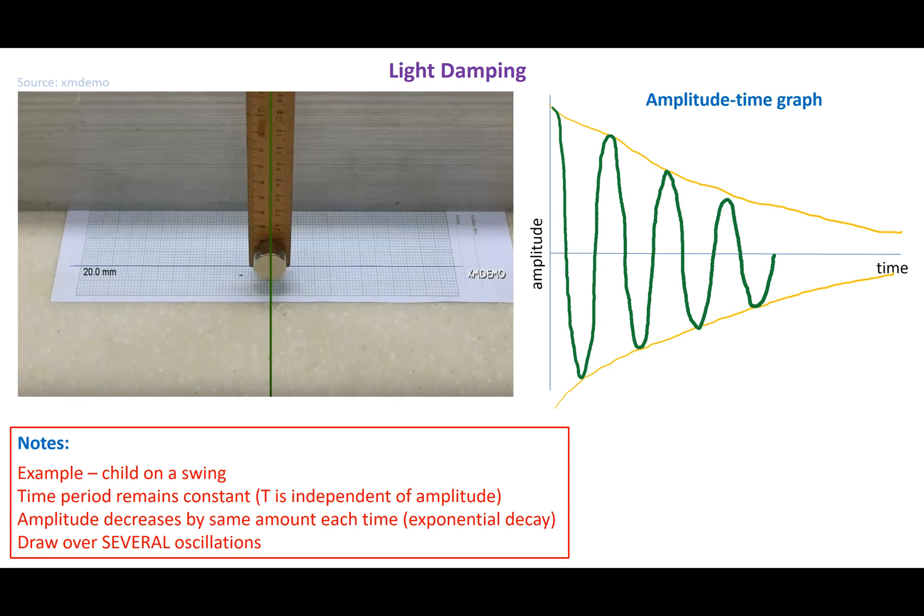If you were to graph what this looks like, you'd get the graph that we have to the right, where the amplitude is decreasing by the same amount each time. The yellow lines that you can see are our exponential decay function. It'll take many, many oscillations to get back to zero. But the key thing to remember is that the time period remains constant, and the amplitude decrease is the same amount each time.